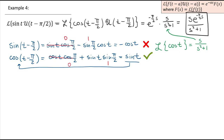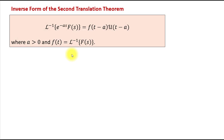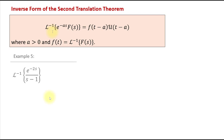Similarly to the first translation theorem, the Second Translation Theorem has an inverse form. Taking the inverse Laplace transform of each side of the equation, the inverse form states: the inverse Laplace transform of the product of e^(−as) and F(s) equals the translated function f(t−a) times the unit step function at a, where f(t) is the inverse Laplace transform of F(s).